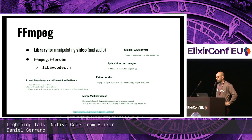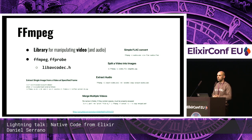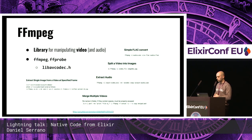I wanted to do this to call FFmpeg code — to manipulate audio and video from video files. FFmpeg ships with libavcodec, which is the C library that you can use. It powers FFmpeg and FFprobe, allowing you to inspect a given video, see how many frames it has, the type of media, and so on. You can extract single images, merge multiple videos, etc.